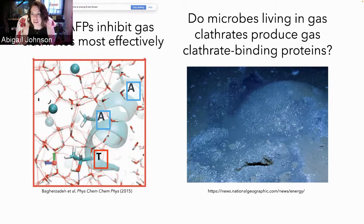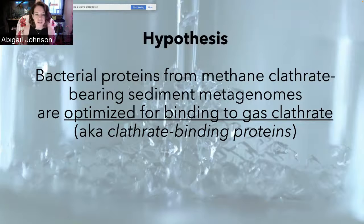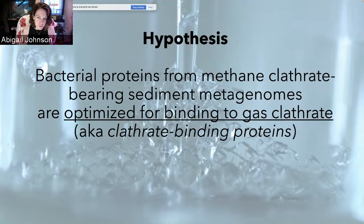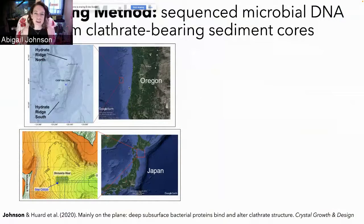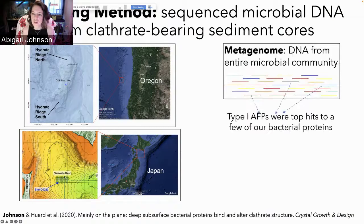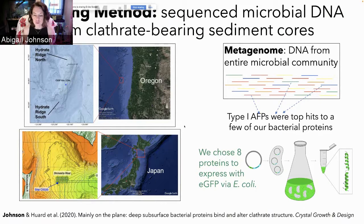We know that there are ice-dwelling organisms that have evolved ice-binding proteins, and there are microbes living in gas clathrates. So our question is: do these microbes produce gas clathrate-binding proteins? Our hypothesis is that bacterial proteins from methane clathrate-bearing sediment metagenomes are optimized for binding to gas clathrates — we would call these clathrate-binding proteins. We sequenced microbial DNA from clathrate-bearing sediment cores off the coast of Oregon at Hydrate Ridge and off Japan at the Shimokita Peninsula. We found that Type 1 AFPs were top hits to some of our bacterial proteins.